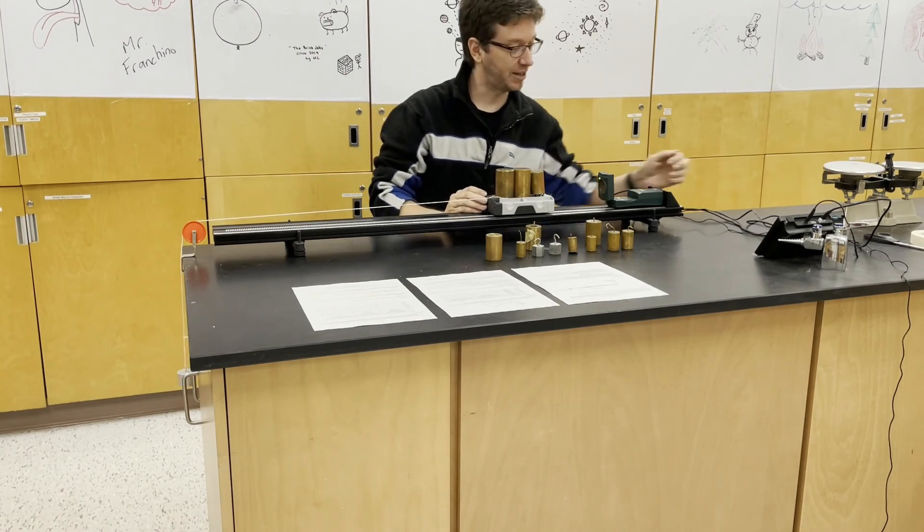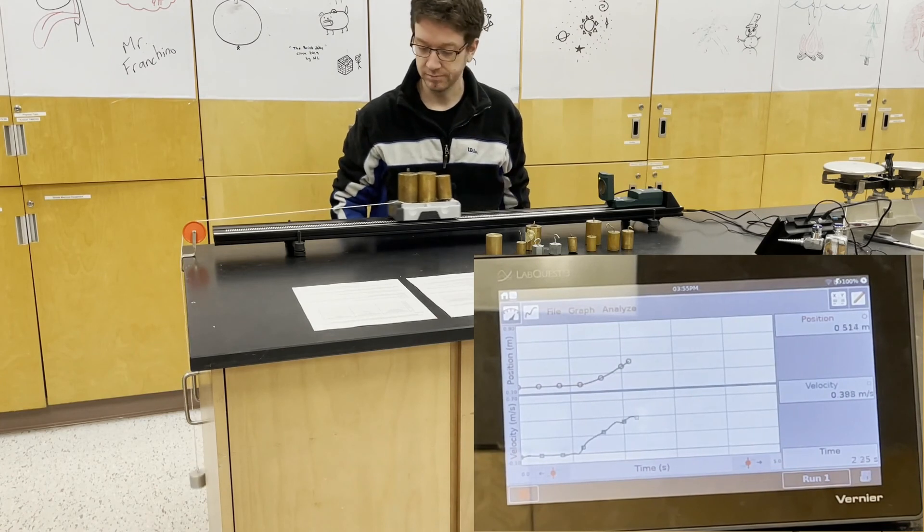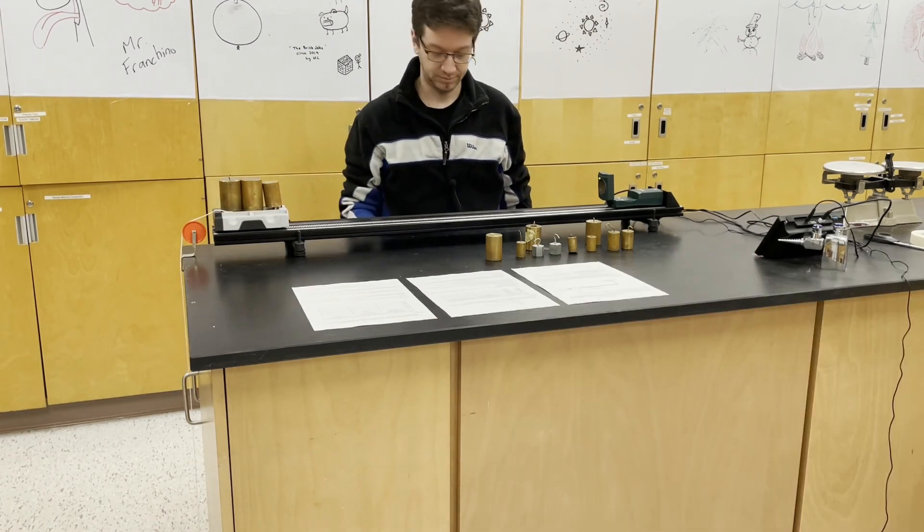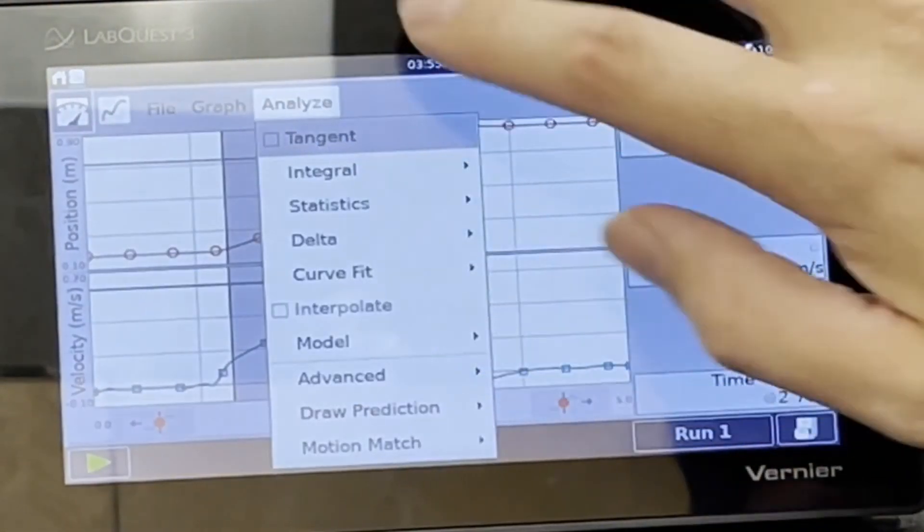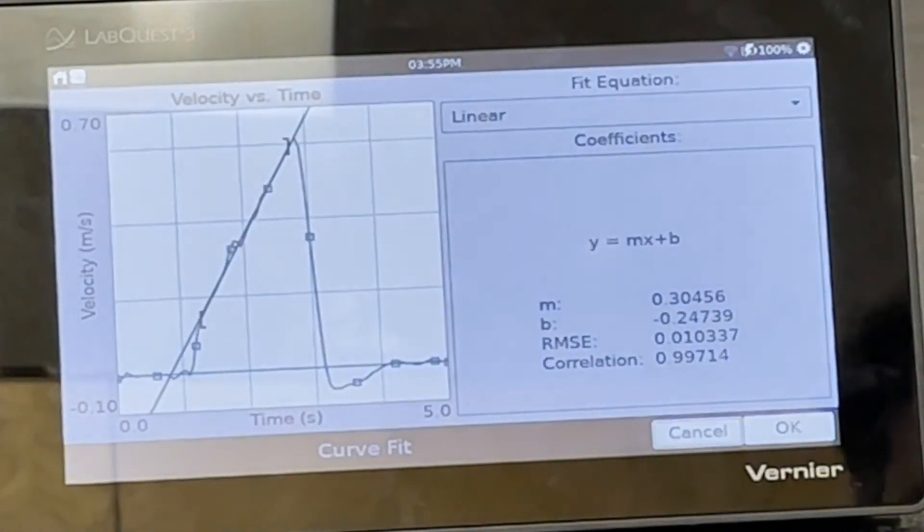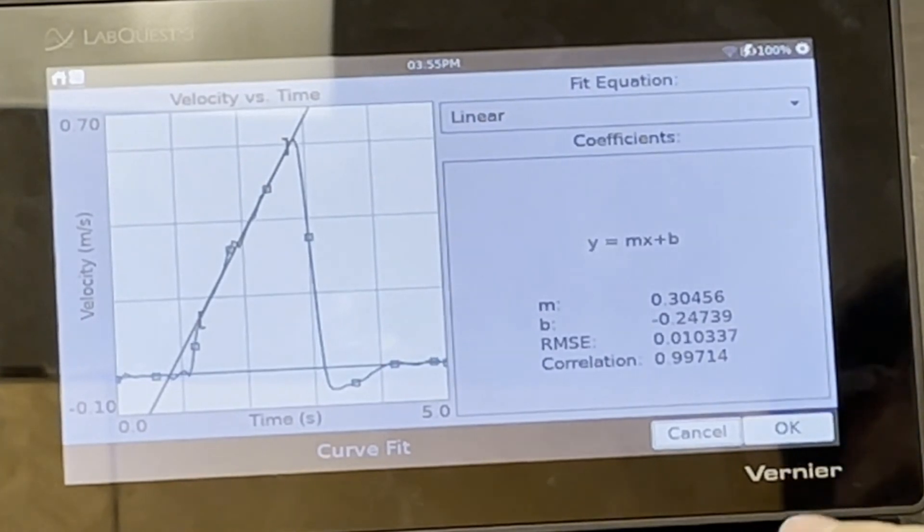And one last time, add another 500 grams. Now our acceleration is 0.30456 meters per second squared.